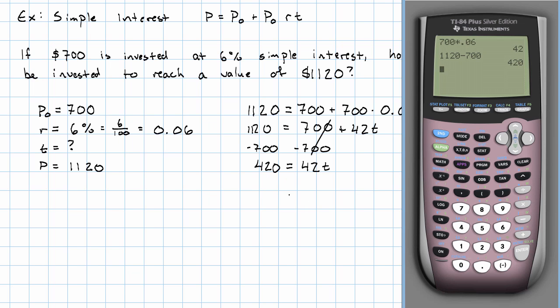I can think of this next step as multiplying both sides by 1 over 42, or as dividing both sides by 42. And I get 10 equals T.